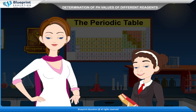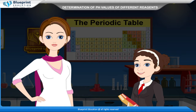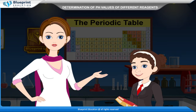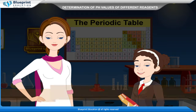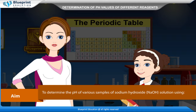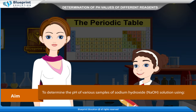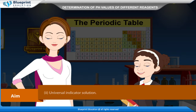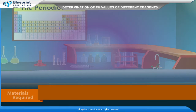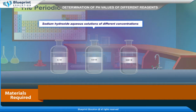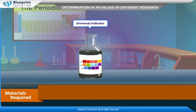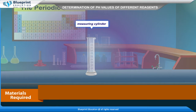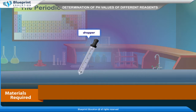Let's do an experiment to determine the pH of various samples of sodium hydroxide, NaOH solution, using pH paper and universal indicator solution. Materials required: sodium hydroxide aqueous solutions of different concentrations — 0.1M, 0.01M, 0.001M — pH paper, universal indicator, test tubes, measuring cylinder, test tube stand, dropper, etc.